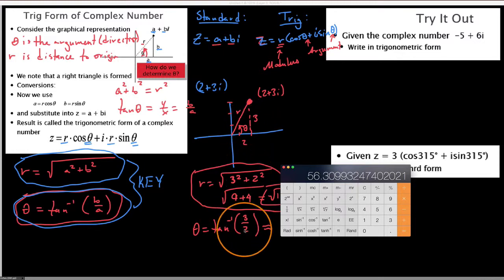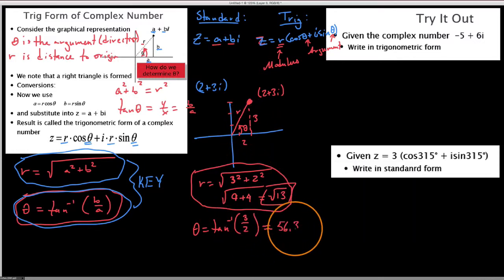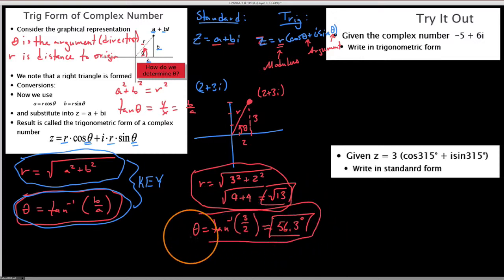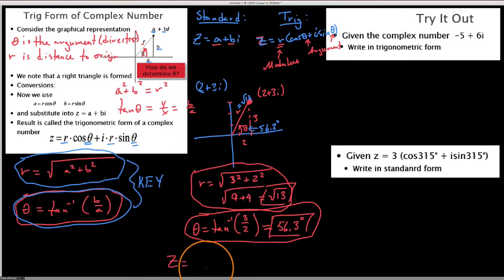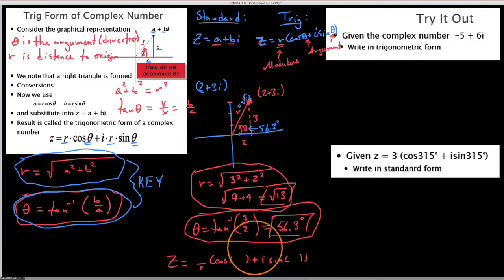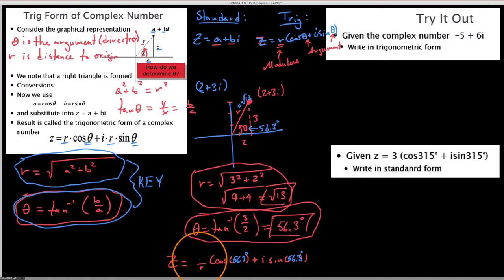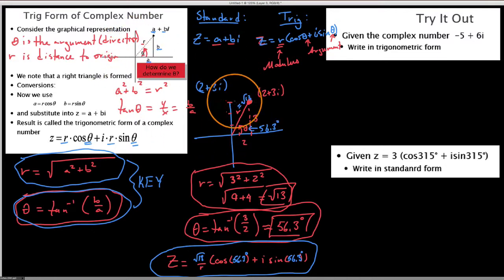We now have what we need to write this number in trig form. The distance is root 13 and the angle theta is 56.3 degrees. So the complex number in trig form looks like: root 13 times the quantity cosine of 56.3 degrees plus i sine of 56.3 degrees. The same angle theta goes in both the cosine and sine. This is 2 plus 3i converted to trig form.